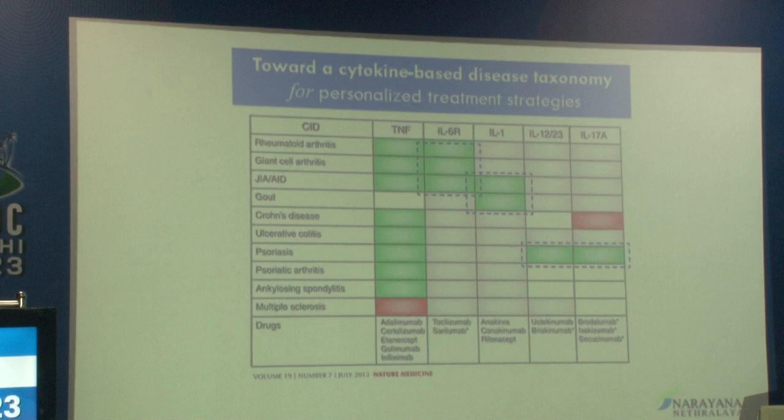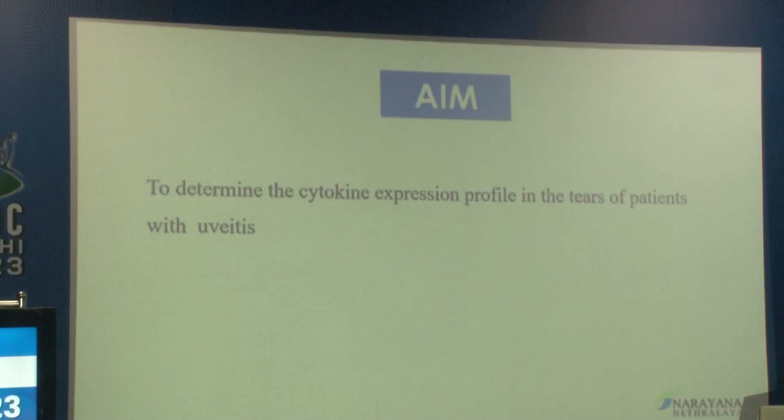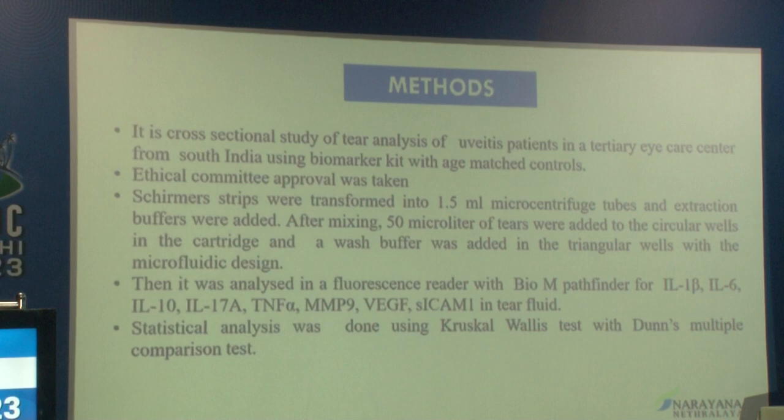There is already a cytokine-based disease taxonomy which exists for personalized treatment strategies for systemic diseases like rheumatoid arthritis, giant cell arthritis, psoriatic arthritis, and ankylosing spondylitis. Our aim of the study was to determine the cytokine expression profile in the tears of patients with uveitis. It was a cross-sectional study for tear analysis in these patients in a tertiary eye care center from South India, using a biomarker kit.